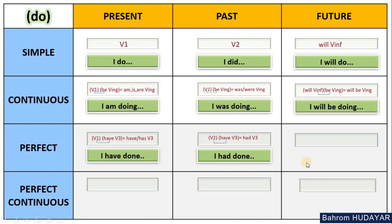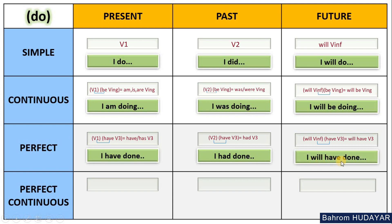Future Perfect: future — 'will + verb infinitive' — perfect — 'have + verb three.' The result is 'will have + verb three.' Important: the infinitive form of 'have' is just 'have' — you cannot change this. It will not be 'will has verb three.' It should be 'will have + verb three.' The third form of 'do' is 'done', so: 'will have done.' Full sentences: 'I will have done', 'you will have done', 'she will have done.'